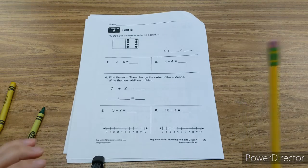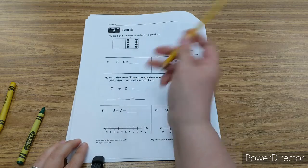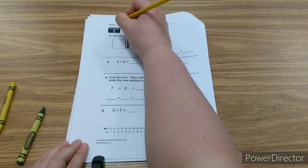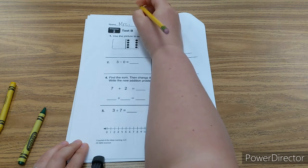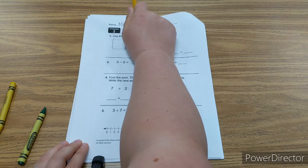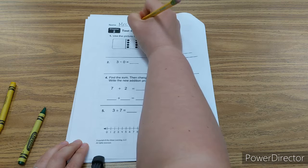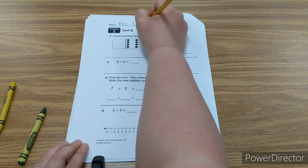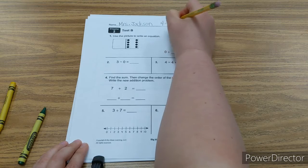So now we're on chapter two test. Again, you're going to want to start with your name. For me it's Mrs. Jackson. For you, it might be Abigail or it might be Berlin or it might be Paisley, but I'm going to write Mrs. Jackson because that's my name.